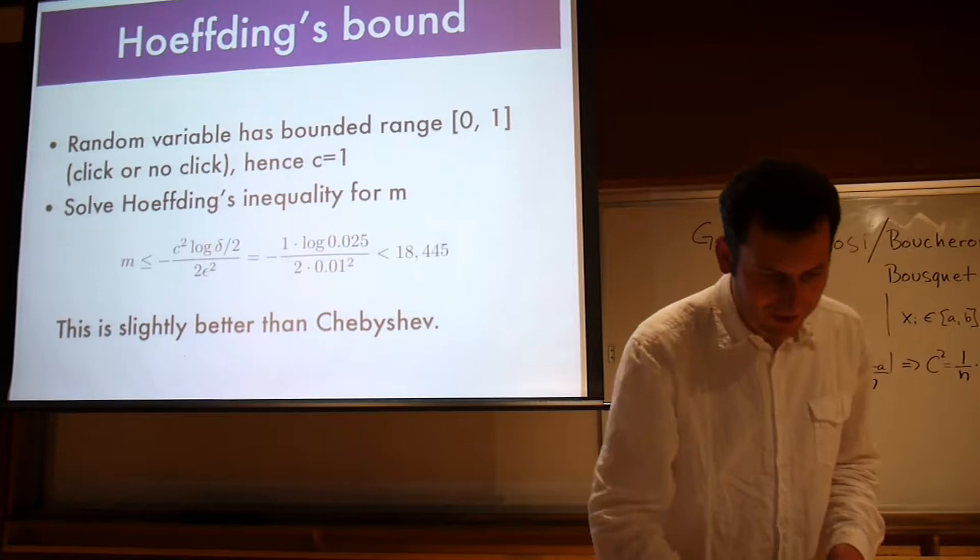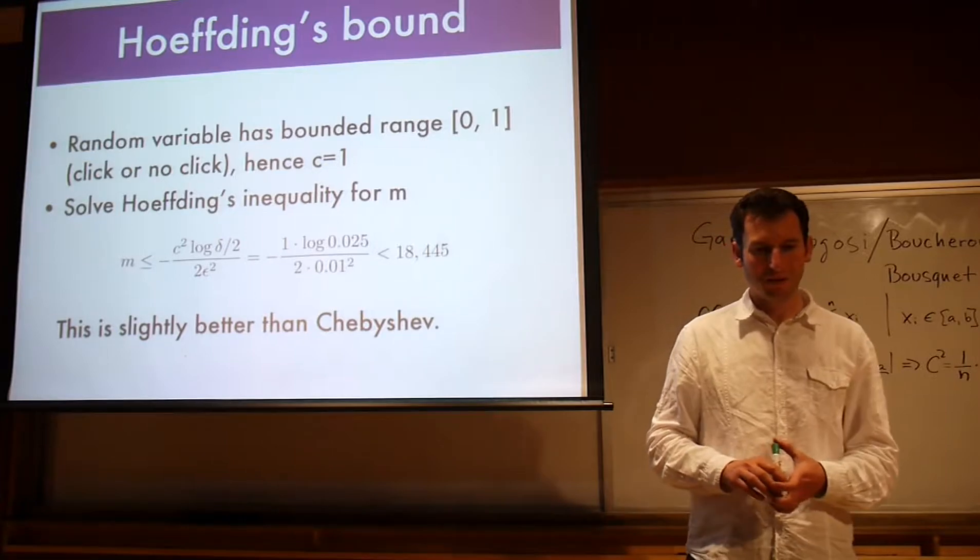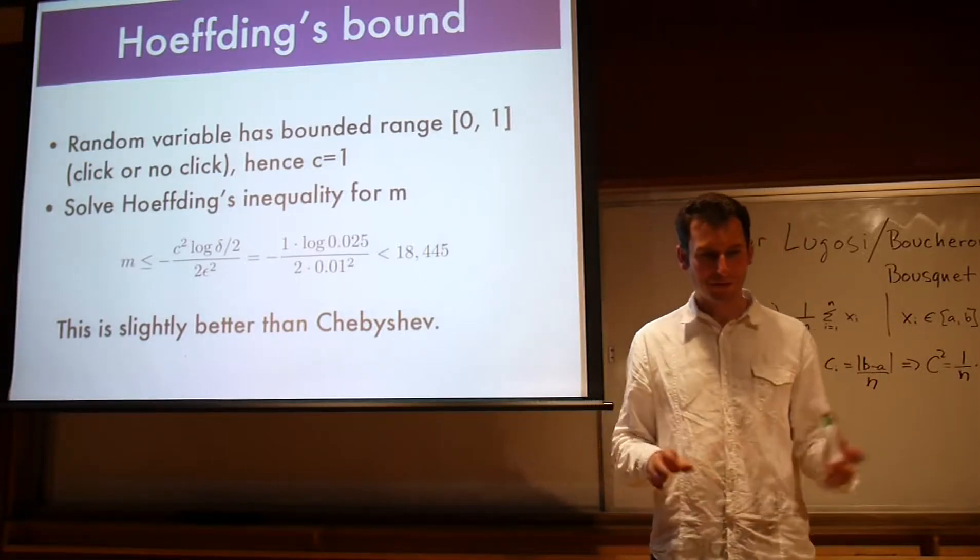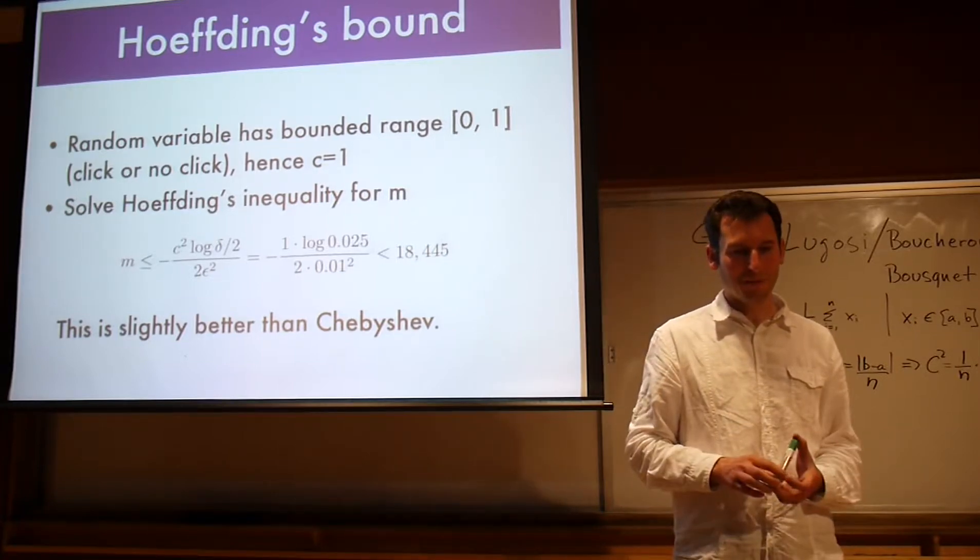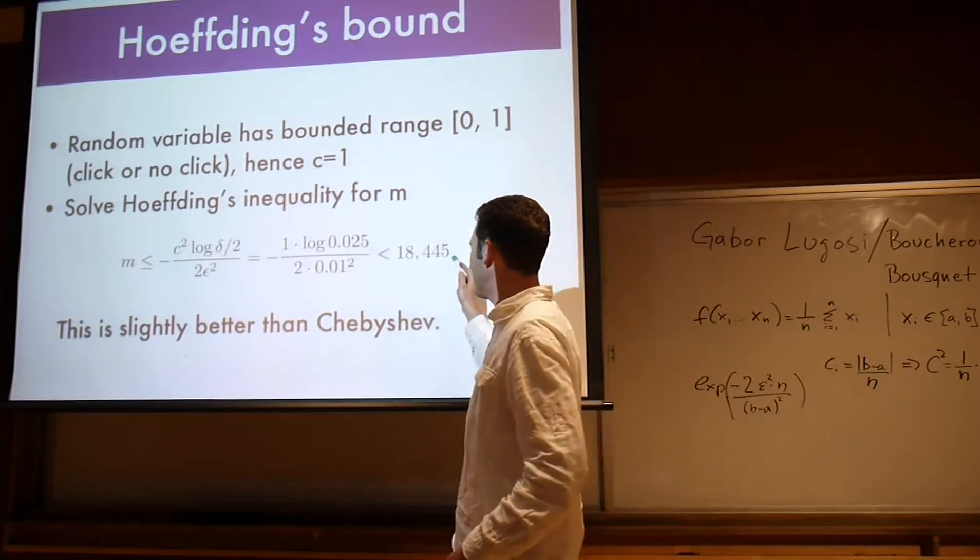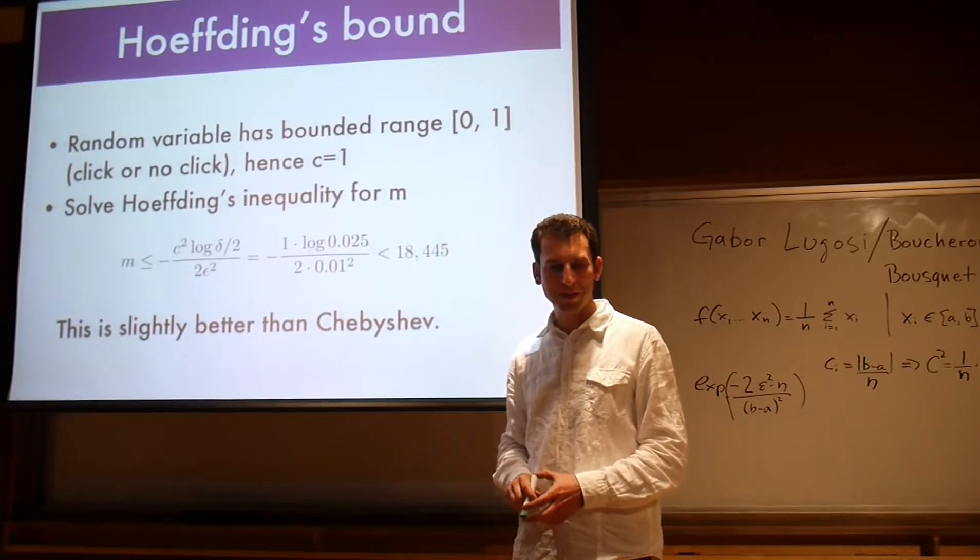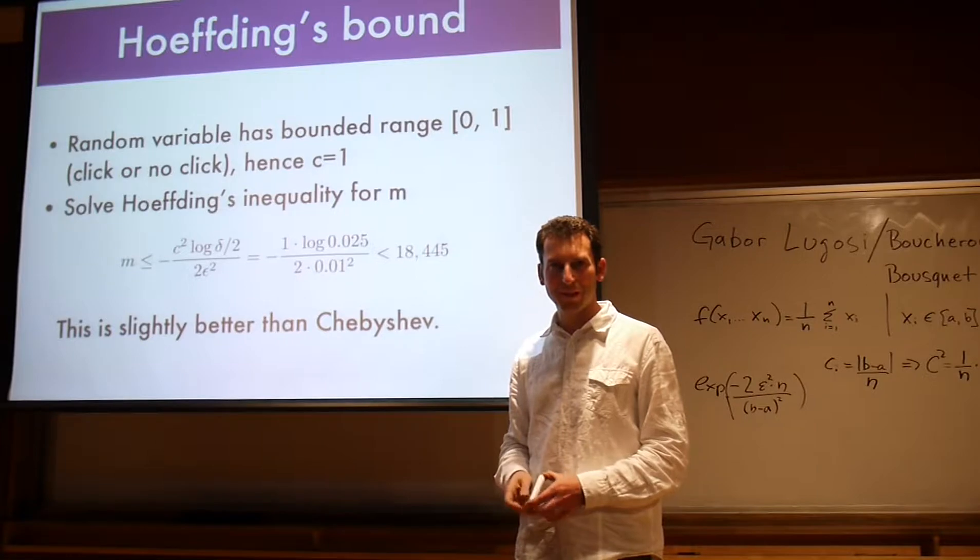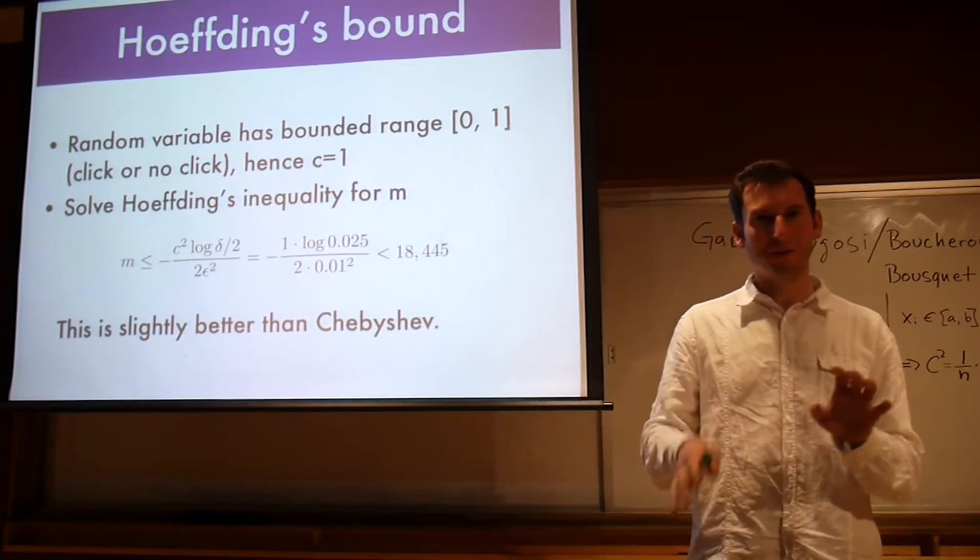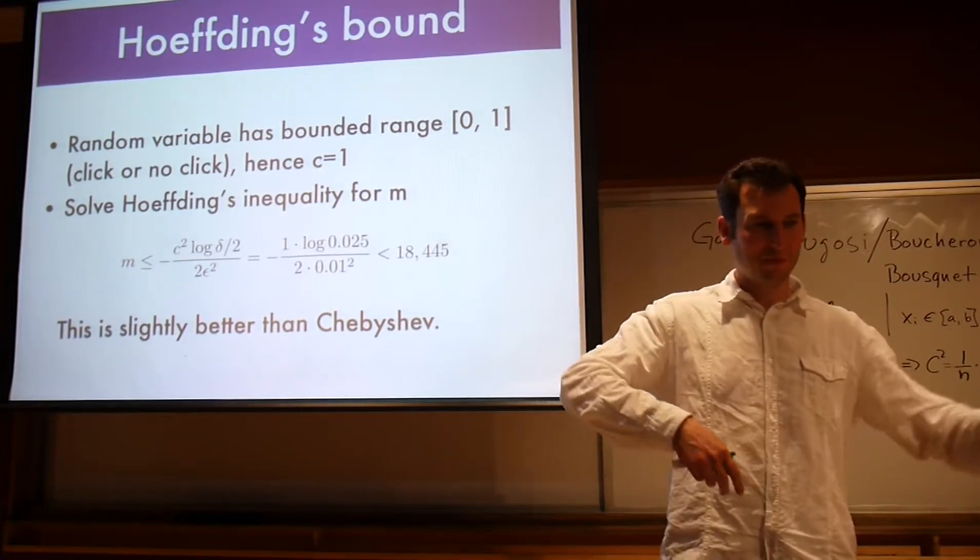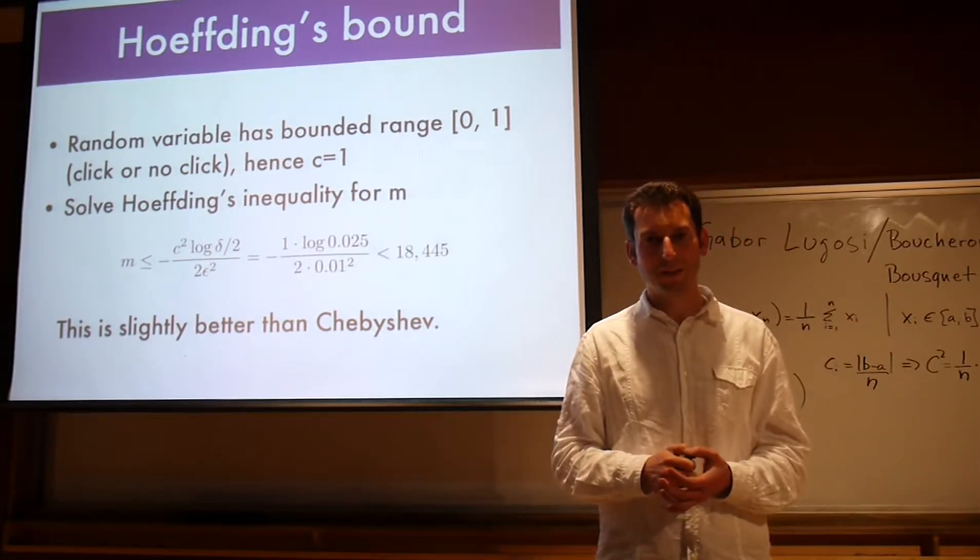Now let's do something slightly tighter. Hoeffding's bound gives you slightly better estimates. We know it's a random variable that has bounded range - click or no click. So C equals 1. We just solve Hoeffding's inequality. We plug in all the numbers and voila we get about 18,000. It's better than what we had before. Before we had 25,000. The problem is that it's actually fairly pessimistic because Hoeffding is really good at probabilities around one half. It's not so good at probabilities close to 0 and close to 1. DKL divergence if you were to plug that in would give you better guarantees.